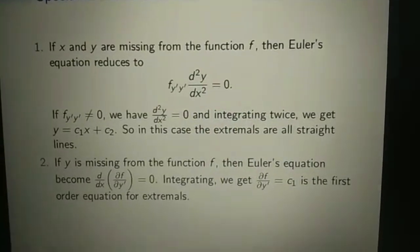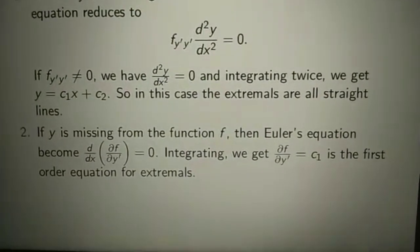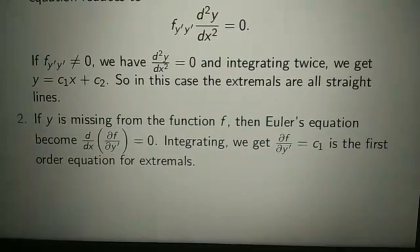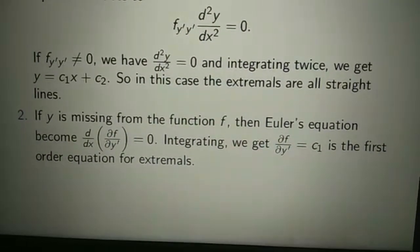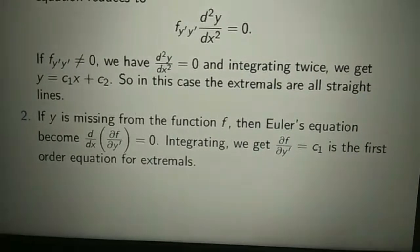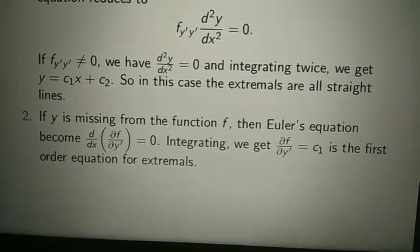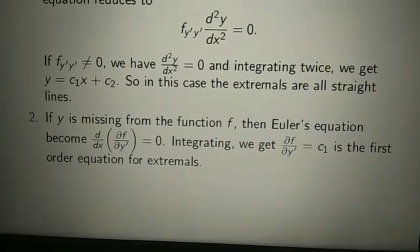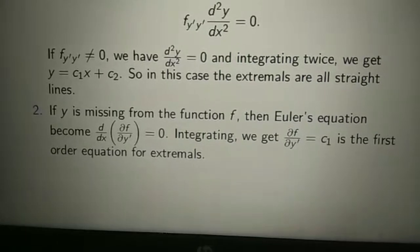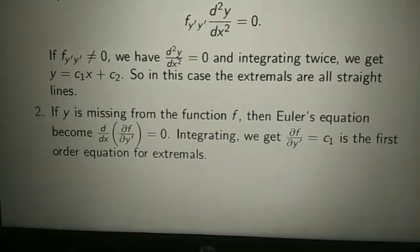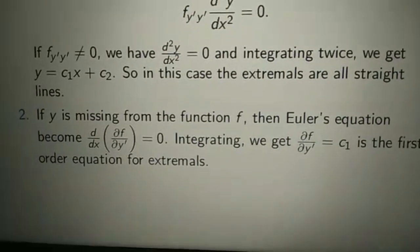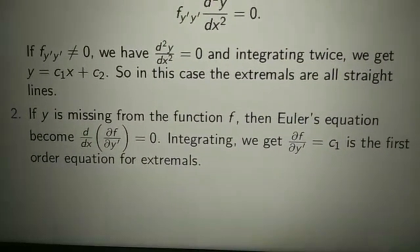Case 2: If y is missing from the function f, then Euler's equation in its original form becomes d/dx of (∂f/∂y') equals 0, because ∂f/∂y equals 0. Integrating, we get ∂f/∂y' equals c₁, which is the first-order equation for extremals.